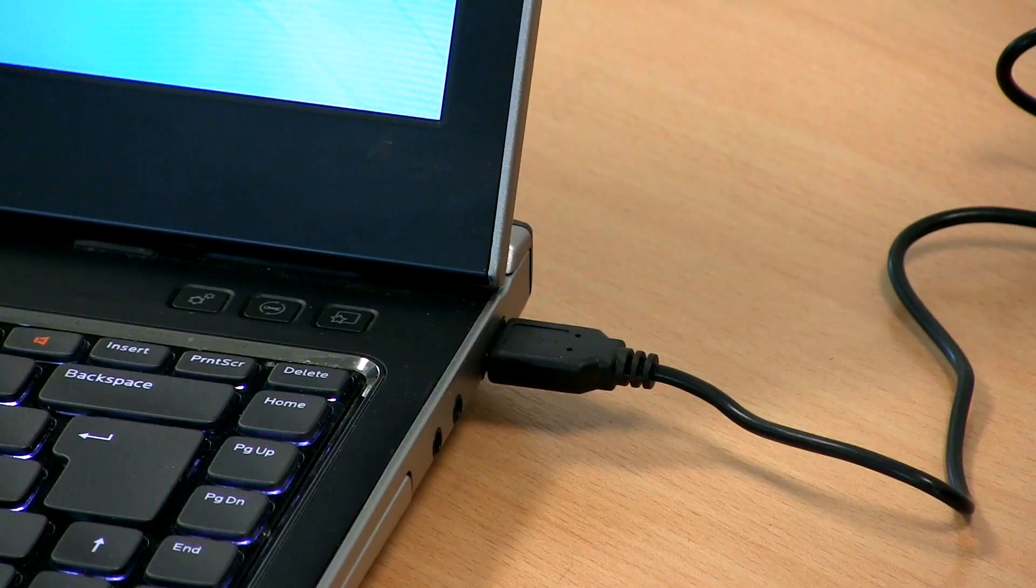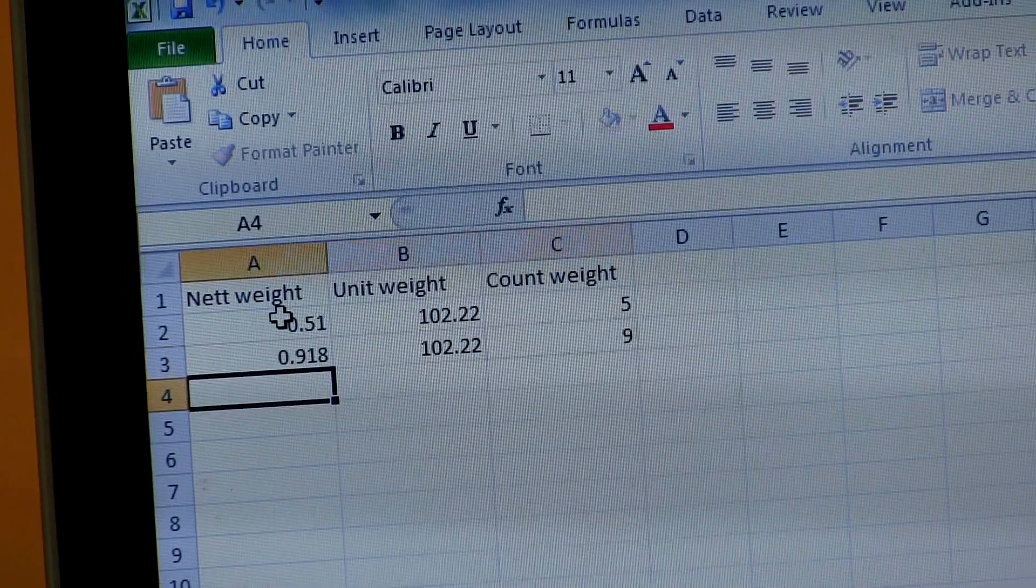Hi, I'm Des McCulloch. I'm here at the Marsden Weighing Group factory in Rotherham to show you the JADEVA JCE counting scale and how you can transfer the weight to a PC using the U key.